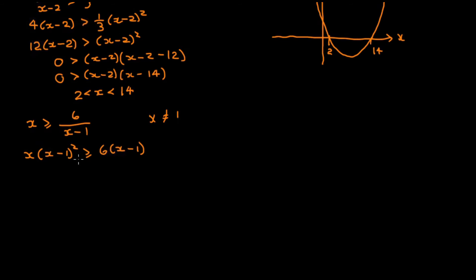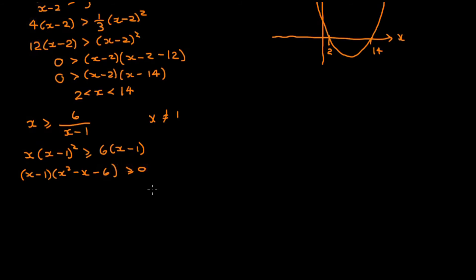The next step is to gather the terms onto one side of the inequality. So we subtract 6 times (x minus 1) from both sides and also take out (x minus 1) as a common factor. From the first term we have left over x times (x minus 1), which is x squared minus x. From the second term, bringing it over gives us a minus 6. So that's greater than or equal to 0.